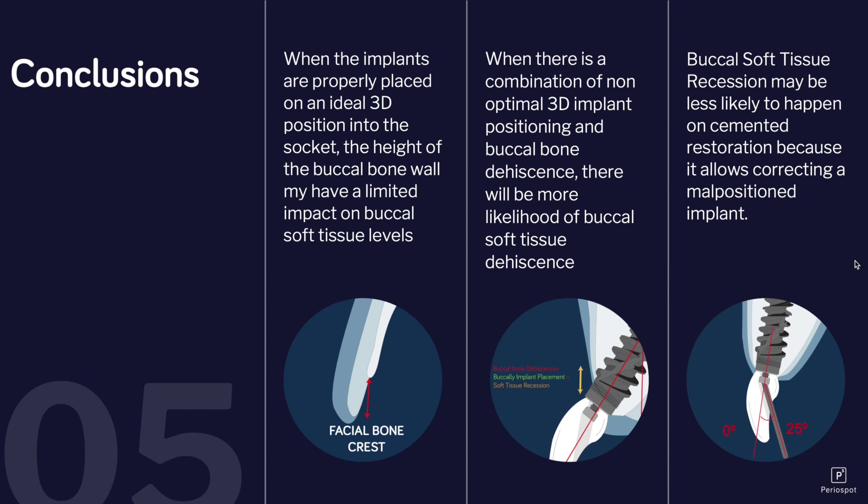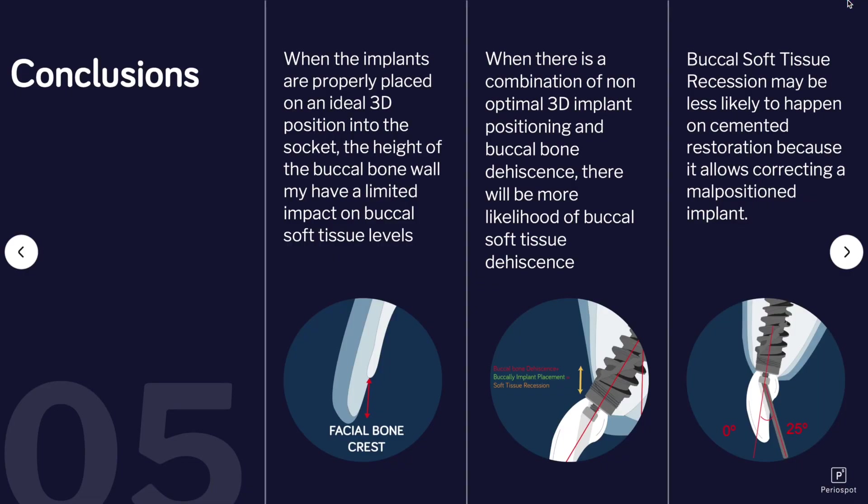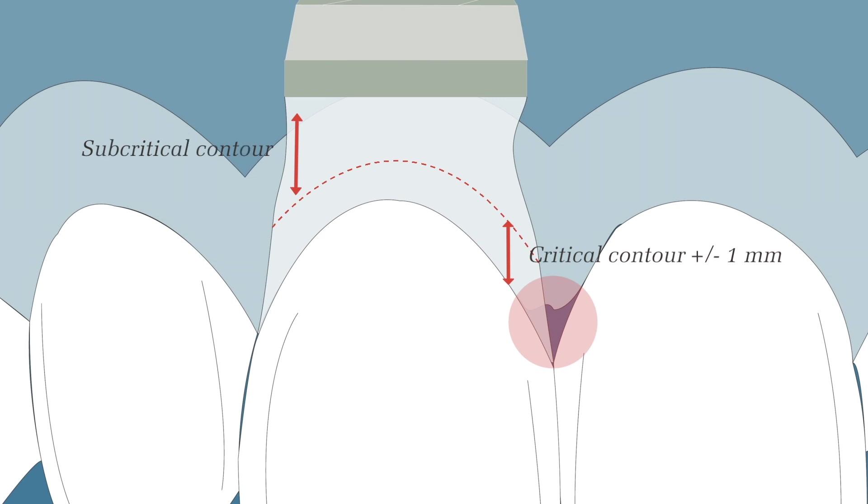Buccal soft tissue recession may be less likely to happen with cemented-retained crowns. This is something I was not really aware of, since I prefer screw-retained restorations almost always. Some abutments are going to occupy the space we should have buccally, and this relates to the theory from Shu in 2010 — the more space we have, the better for the soft tissue. This is also supported by articles from Gustavo Cabello in 2015.